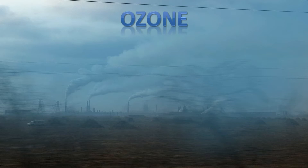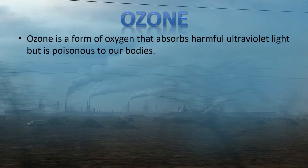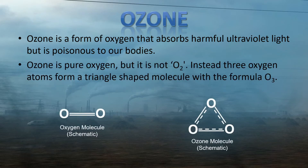First, let's look at what ozone is. Ozone is a form of oxygen that absorbs harmful ultraviolet light from the sun when it is in the atmosphere, but ozone is also poisonous to our bodies. Ozone is pure oxygen, but it is not O2 like the oxygen molecules in normal air. Instead, three oxygen atoms form a triangulate molecule with the formula O3.